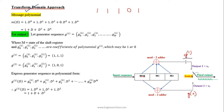The message signal input bit stream is given as 11101. Both the message input and the generator sequences g1 and g2 of the convolutional encoder are expressed in terms of polynomial representation. g1 is the generator sequence of the first output and g2 is the generator sequence of the second output. These generator sequences are also known as impulse responses.